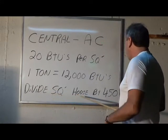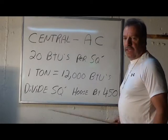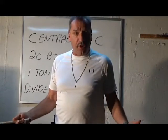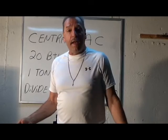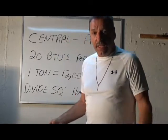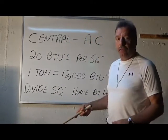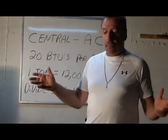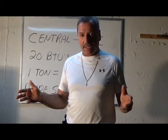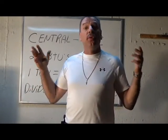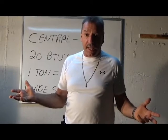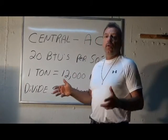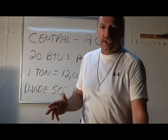You divide the square footage of the house by 450. For instance, if you have a 2,000 square foot home and you divide it by 450, you would come up with 4.4 — that's the tonnage you would need. They don't make a 4.4 ton compressor or condenser, so you step up to a 5 ton condenser. So a 2,000 square foot home would take a 5 ton condenser.